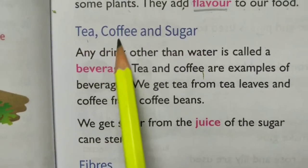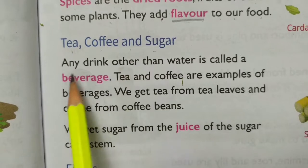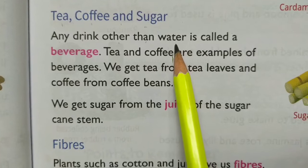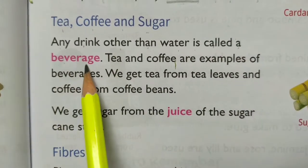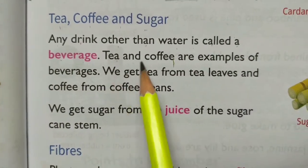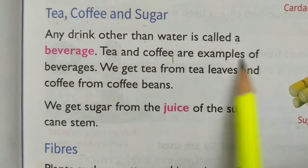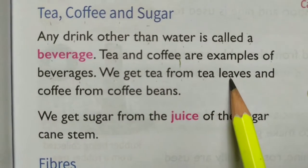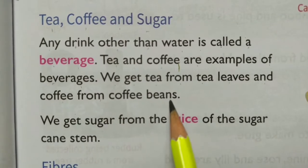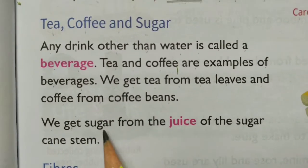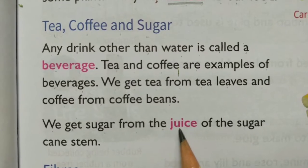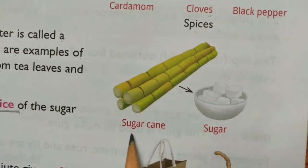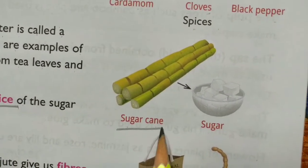Tea, coffee and sugar. Any drink other than water is called a beverage. Tea and coffee are examples of beverages. We get tea from tea leaves and coffee from coffee beans. We get sugar from the juice of the sugarcane stem.